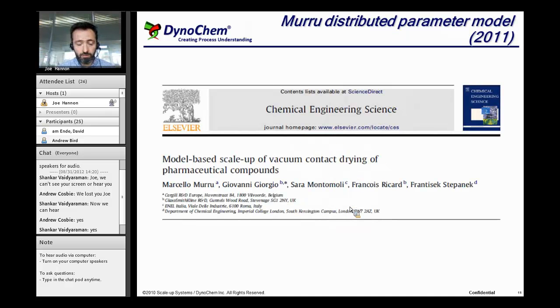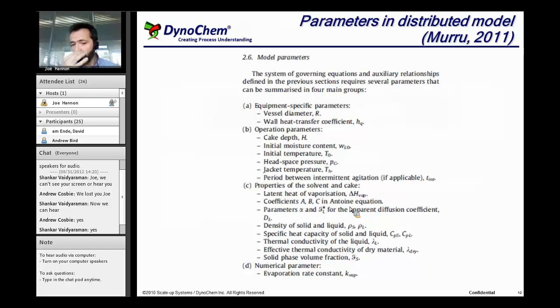In the last couple of years, there have been a few good reviews of the state of the art. Most of them strongly feature the Schlunder model. There's also been some examples where people have built more like computational fluid dynamics models of vacuum contact drying. So when you either take that kind of distributed parameter approach or when you take the Schlunder type approach, you need a lot of the same kind of information.